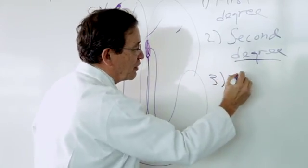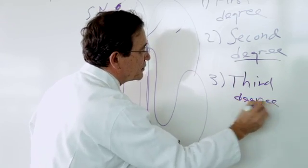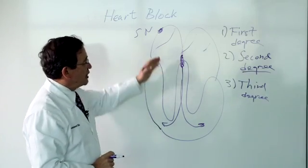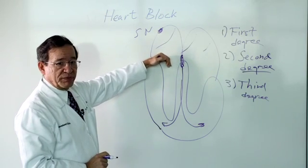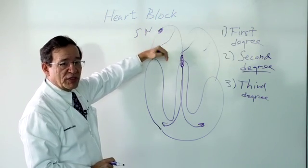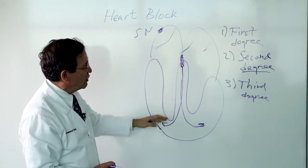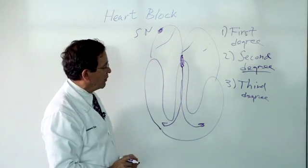And of course there is third degree. Third degree heart block means the impulses just don't get through. Maybe an occasional rare one may sneak through but most of them just don't get through. So if the impulses do not get through we refer to this as third degree heart block.